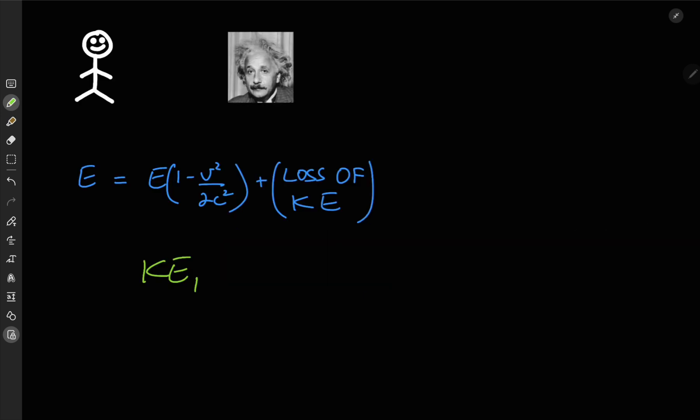Now if we denote the kinetic energy of the box before it emits the burst of radiation as KE1 and the kinetic energy after emitting that burst to be KE2, and we write these kinetic energies in terms of different values for the velocity of the box, that would make no sense because again we have a closed system,